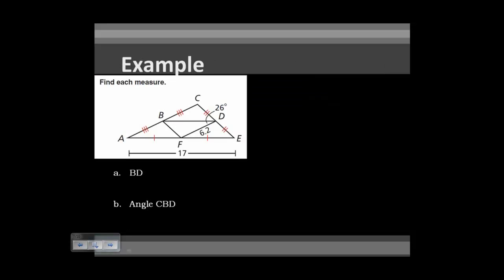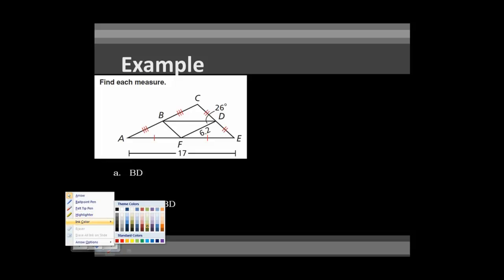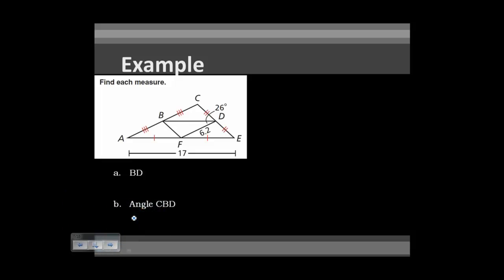Let's apply the mid-segment theorem. We need to find the measure of BD and angle CBD. For segment BD, which is a mid-segment, we know that BD must be half of segment AE. Since AE = 17, BD = 17/2 = 8.5.